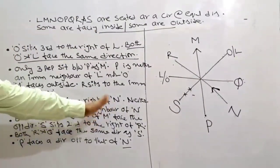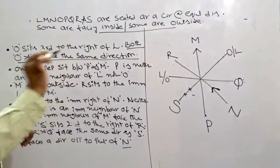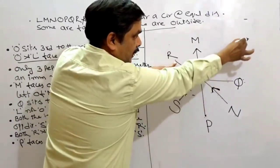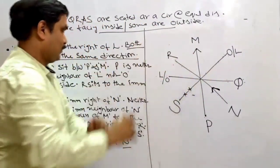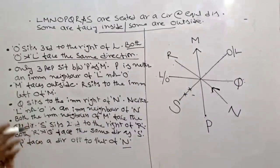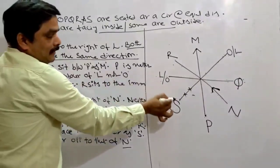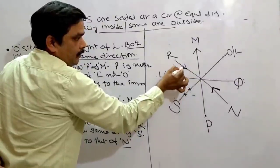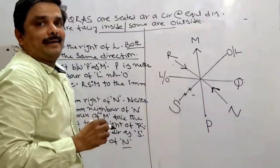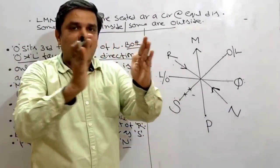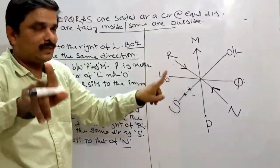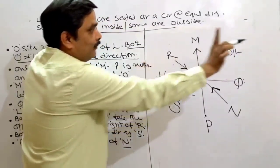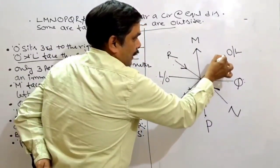Both the immediate neighbors of M face the opposite direction — meaning if one neighbor is facing outside, the other should be facing inside, or vice versa. Then: S sits second to the right of R. For S to be second to the right of R, R must be facing inside. Only then can we say S is second to the right of R. Also, the immediate neighbors of M face opposite directions — when this person is facing inside, the other must be facing outside.